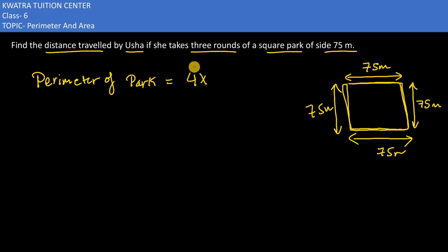So what is the formula for perimeter of a square? That is 4 × s. Now if we have 4 × 75, this would give you 300 meters. This is for one round.